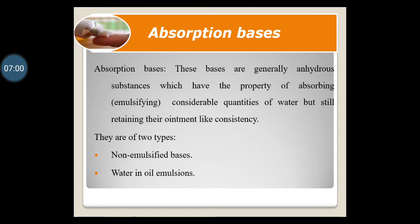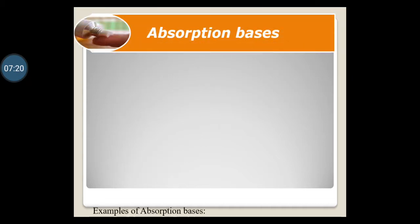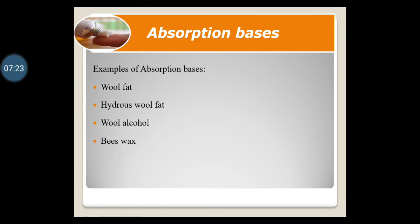Water-in-oil emulsions are capable of absorbing more water and have the properties of non-emulsified bases. For example, hydrous wool fat, also called lanolin. The examples of absorption bases are wool fat, hydrous wool fat, wool alcohol and beeswax. Let us discuss each one by one.